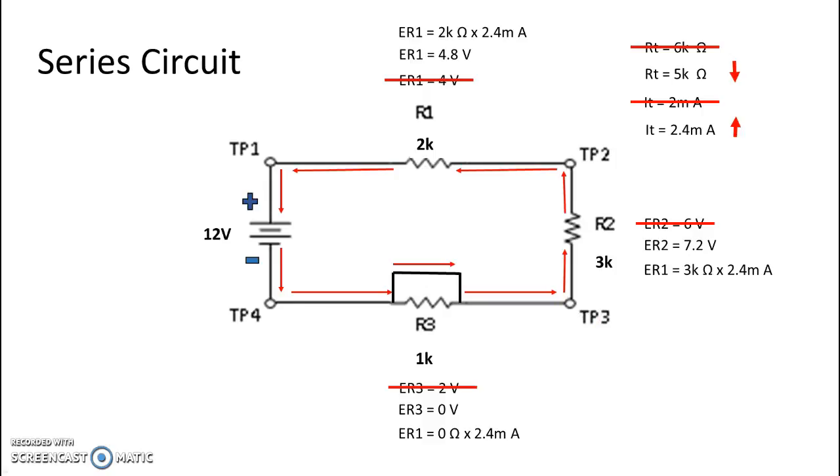if I put my reference lead at test point 4 and my red lead at test point 3, I see red minus black, which is 0 minus 0, showing me a difference of potential of 0 volts, which of course we know to be because we did the math.